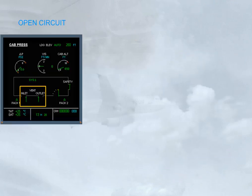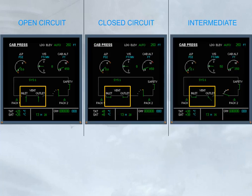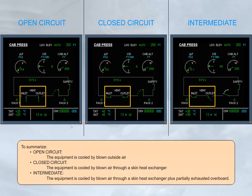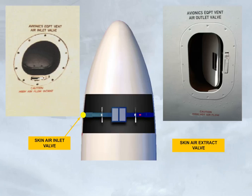To summarize: Open circuit — the equipment is cooled by blown outside air. Closed circuit — the equipment is cooled by blown air through a skin heat exchanger. Intermediate — the equipment is cooled by blown air through a skin heat exchanger, plus partially exhausted overboard. The skin air inlet valve is located on the left-hand side of the aircraft, and the skin air extract valve with its small flap on the right-hand side.